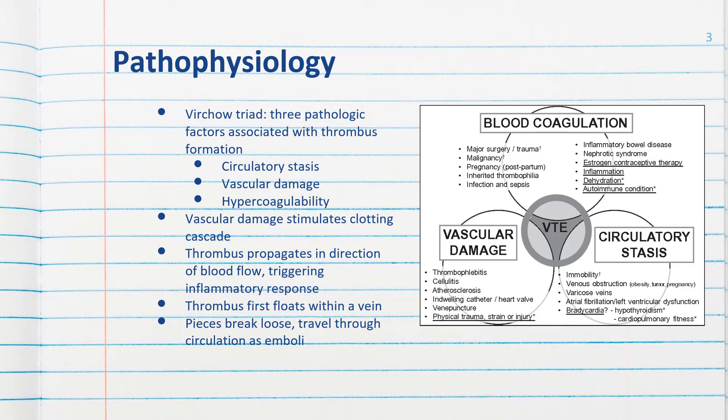And regarding blood coagulation — the hypercoagulability mentioned as a factor in Virchow's triad — many things can lead to increased coagulability, including major surgery and trauma, even malignancy. It can be inherited as a thrombophilia, and infection and sepsis, inflammatory bowel disease also contribute.